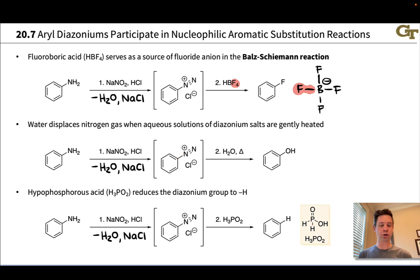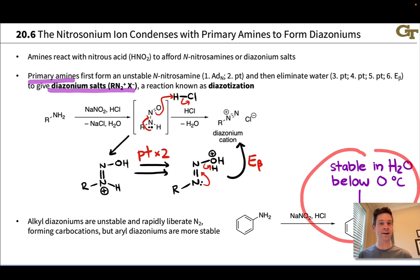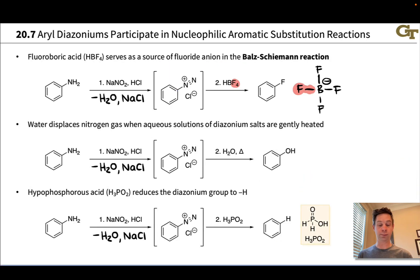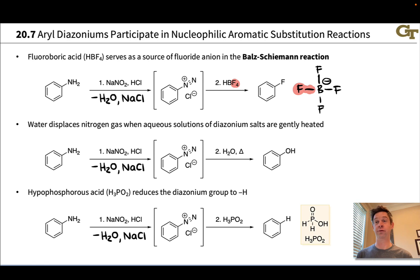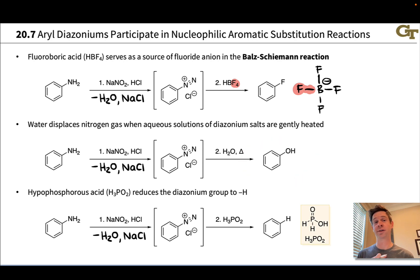If you take that cold solution of diazonium salt and warm it to room temperature, it will slowly but surely lose N2 with OH coming in to produce a phenol. This is a nice way to link oxygen to an aromatic ring — very difficult to do this directly using reactions we already know. By contrast, the traditional approach would require very harsh conditions: sodium hydroxide at high temperature with a very electron-deficient aromatic ring to establish the C–O bond via conventional nucleophilic aromatic substitution.